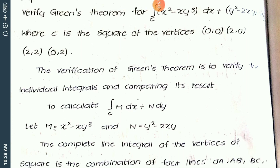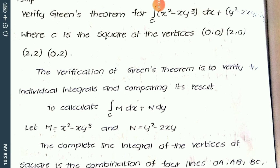Verify Green's theorem for the integral over C: (x² − xy³)dx + (y² − 2xy)dy, where C is the square with vertices (0,0), (2,0), (2,2), and (0,2). This is the given problem.